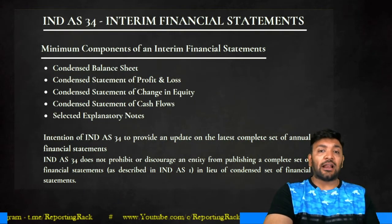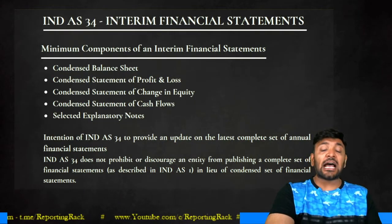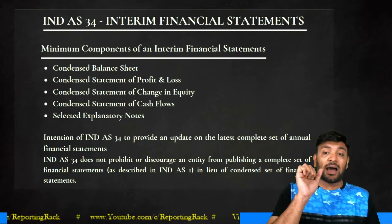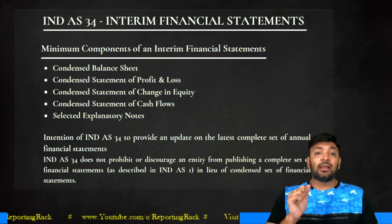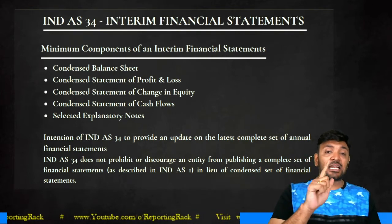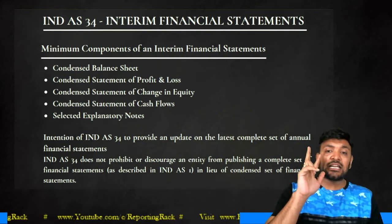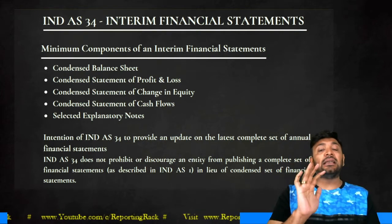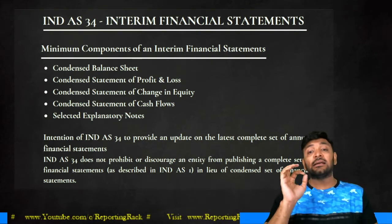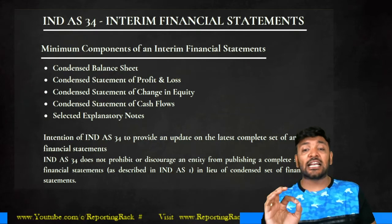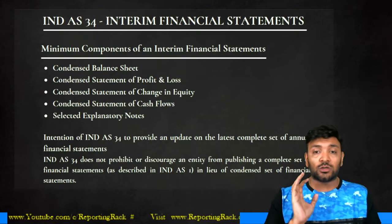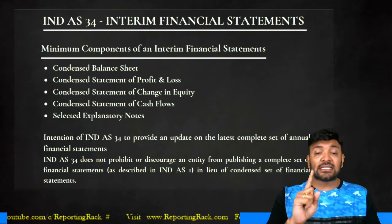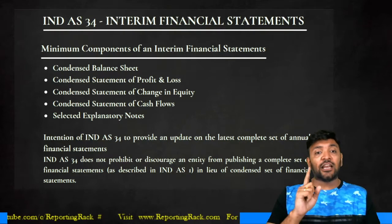A condensed set of financial statements has the following minimum components: a condensed balance sheet, a condensed statement of profit and loss, a condensed statement of changes in equity, a condensed cash flow statement, and selected explanatory notes — note that it is selected explanatory notes, not condensed notes to accounts.